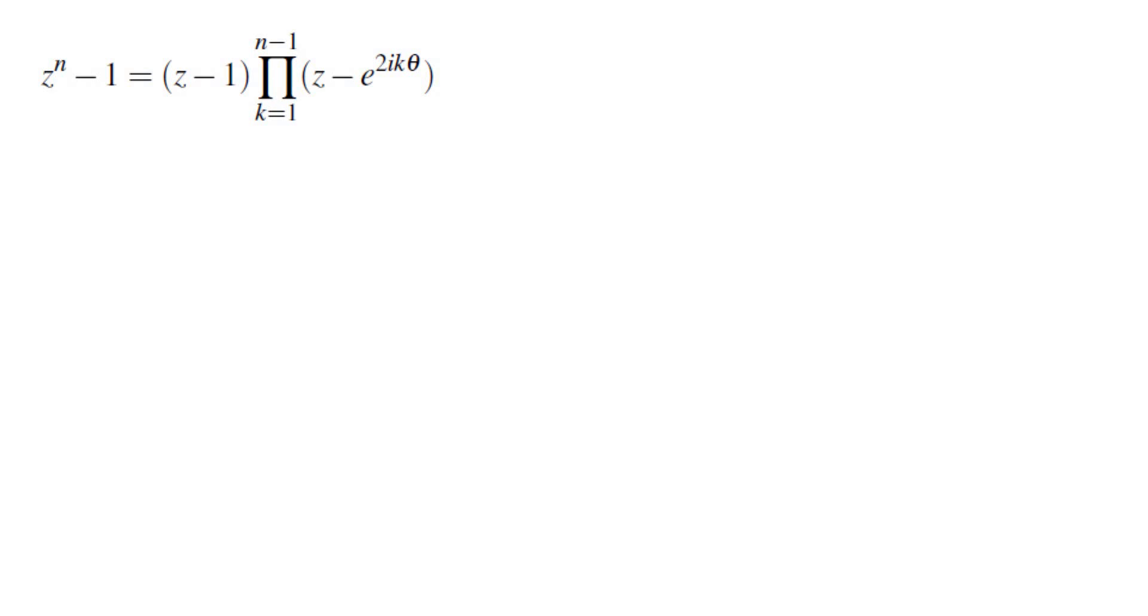they are missing the root of z equals 1. So, we have a factor of (z-1) times the product of (z - e^(2ikθ)) because k goes from 1 to n-1. If it goes all the way to n, then that would give us the factor of z-1.